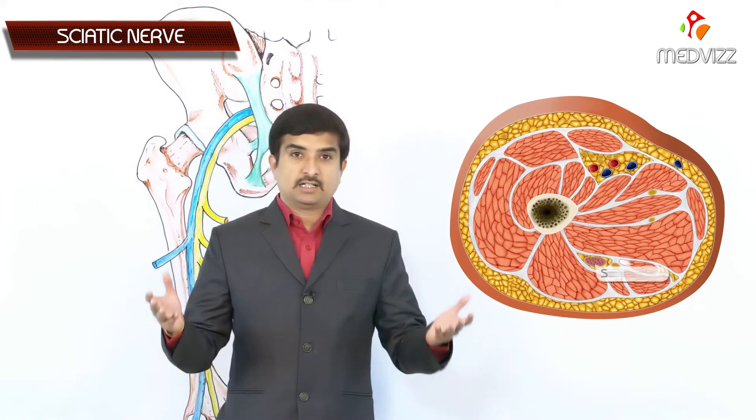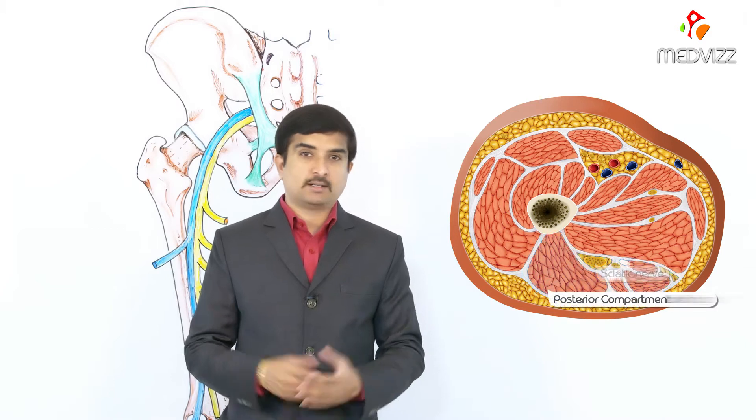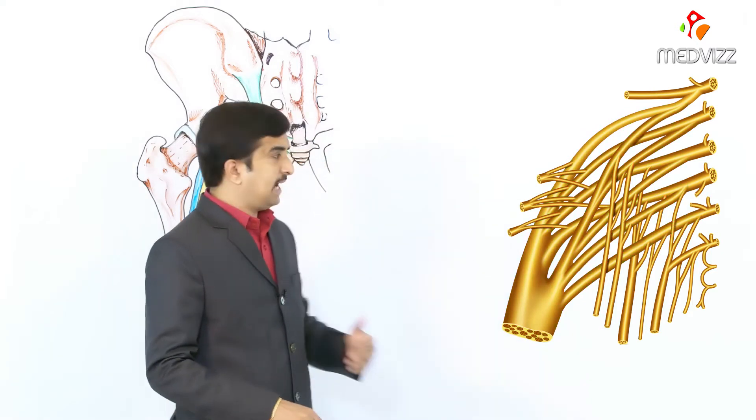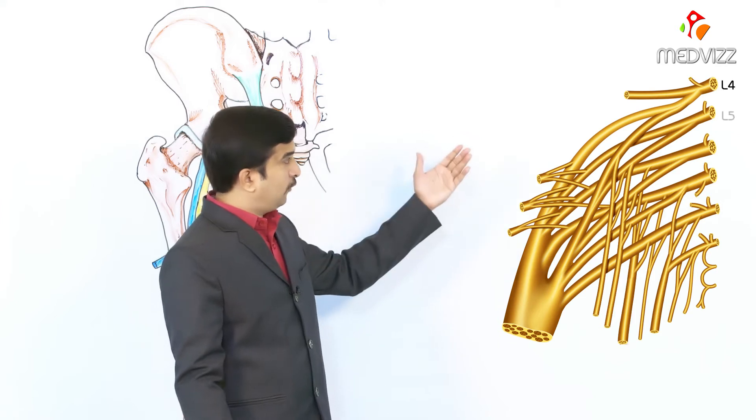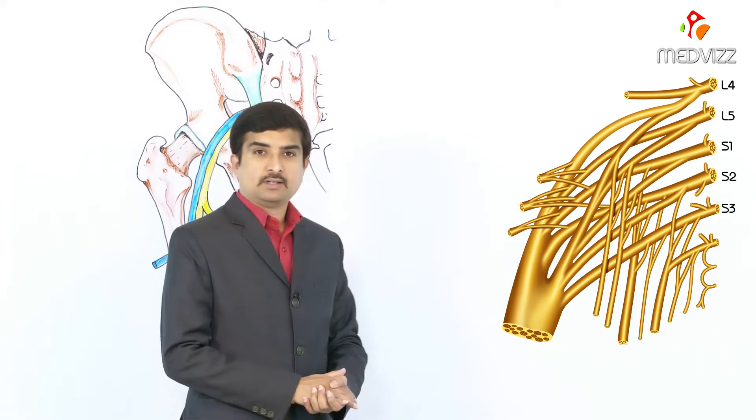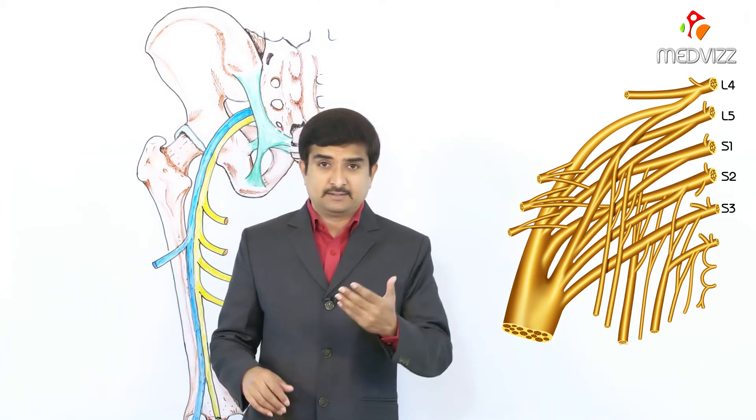In today's class we are going to discuss about another important nerve of the lower limb, which is the sciatic nerve. The sciatic nerve is the chief nerve of the posterior compartment of the thigh, the largest branch of the sacral plexus, and the thickest nerve of the body. Its origin is from the ventral rami of L4 to S3 nerves.